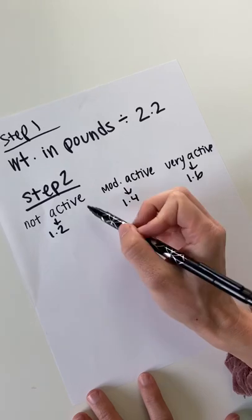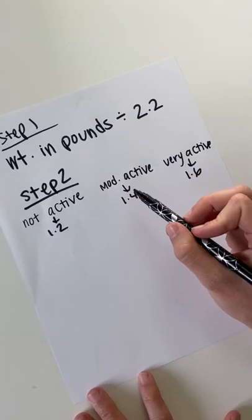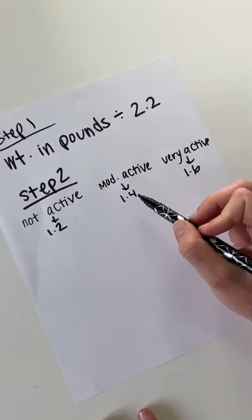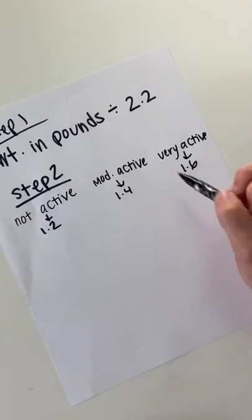Next, determine your activity level. If you don't really exercise, you can use the 1.2 number. If you exercise about two to three times per week, use 1.4. If you exercise more than that, use 1.6.